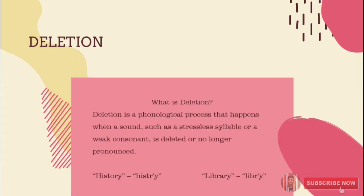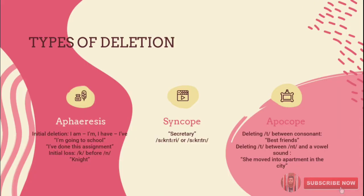The first is deletion. The word deletion comes from the verb 'delete' which means remove or obliterate — in Bahasa it is called 'menghapus'. Deletion is a phonological process that happens when a sound, such as a stressless syllable or a weak consonant, is deleted or no longer pronounced. For instance, 'history' becomes 'history' and 'now' becomes 'now'. It is a process by which a sound present in the phonemic form is removed from the phonetic form in certain environments for ease of production.